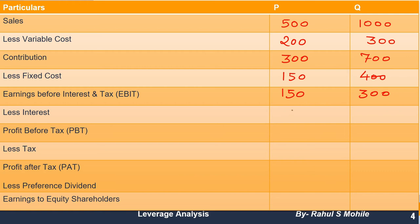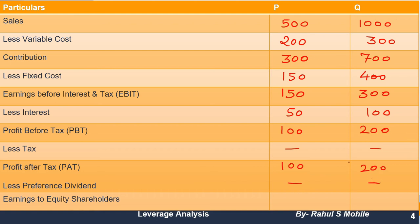Interest is given as 50 for P and 100 for Q. So PBT: 150 minus 50 equals 100 for P, and 300 minus 100 equals 200 for Q. Since tax information is not given in the question, I'm putting a dash. Profit After Tax will be same — 100 and 200. Preference Dividend is also not given, so we put a dash. Final answer: Earnings to Equity Shareholders is 100 for P and 200 for Q.